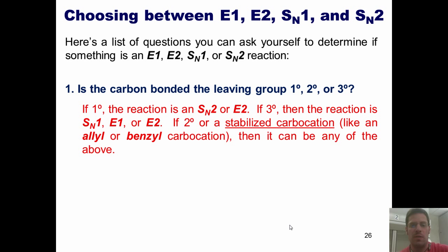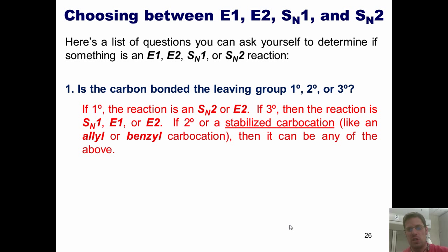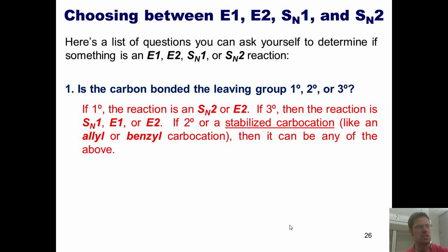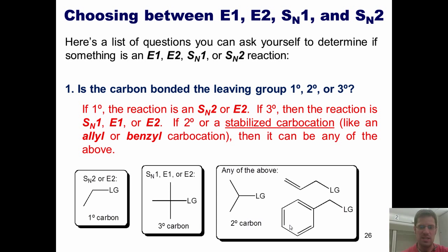If it's tertiary, it can't be an SN2 — I'll explain why later. So if it's tertiary, it can only be SN1, E1, or E2. Now if it's secondary, or if it's a stabilized carbon such as one in an allylic or benzylic position, then it could be any of the above.